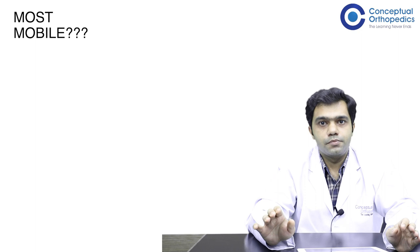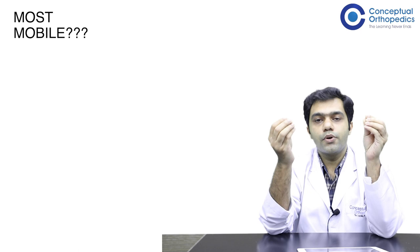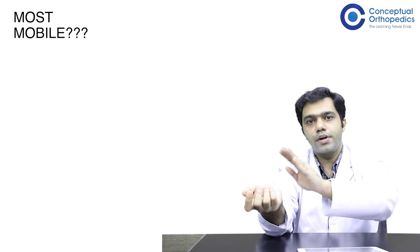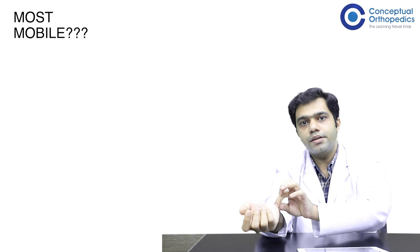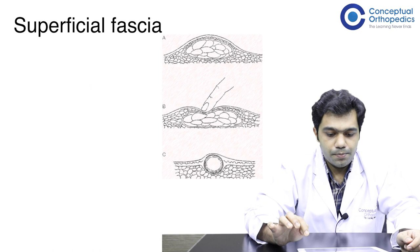Which is the most mobile swelling that can happen in your body? The one which arises from the skin. When you consider any swelling arising from the skin, it can be mobile in any plane. If you consider a pedunculated skin tag, it is mobile in all planes. Even if it is any fixed structure on the skin, it is still mobile in any plane — as you can see, a skin mark which is mobile in all directions.